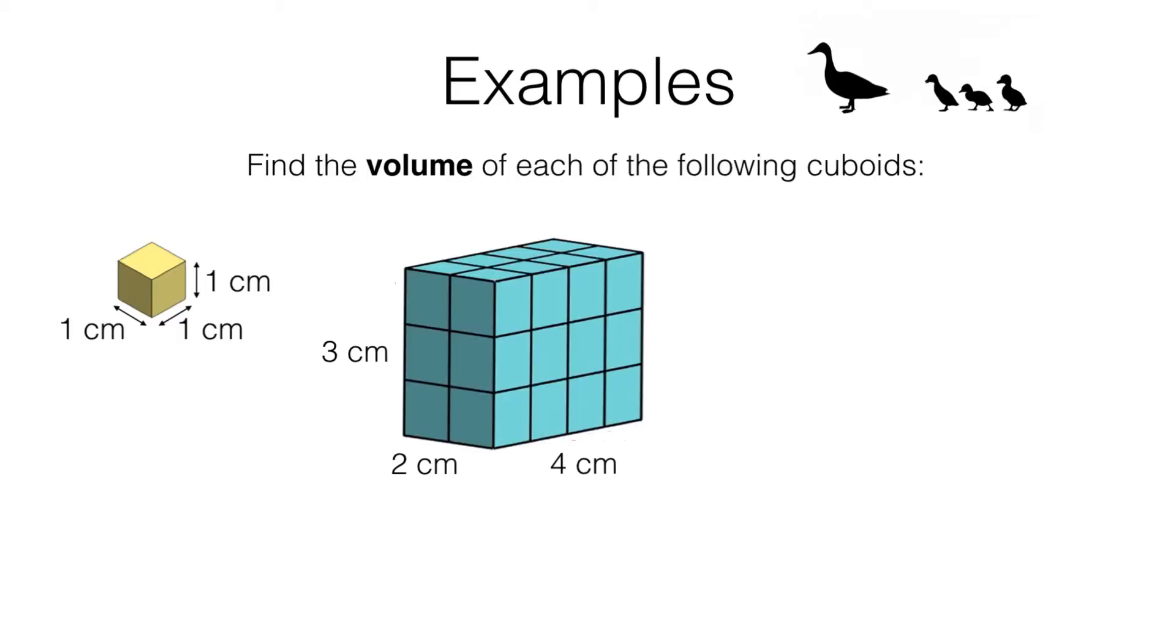In these examples we need to find the volume of each of the cuboids. Now the first cuboid is actually a cube with side length one centimetre. It is one centimetre long, one centimetre wide and one centimetre high. We say that its volume is one cubic centimetre or one centimetre cubed, which we write like this.